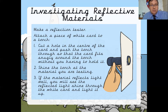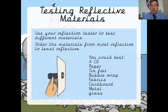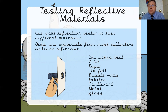What I want you to do is make your reflection tester and carry out an investigation on various products. Here's a list of things you could test: maybe a CD, paper, tin foil, bubble wrap, fabric, cardboard, metal, glass, or any other items you want to test. Think about how reflective they are by looking at how much light reflects back onto your white piece of card.